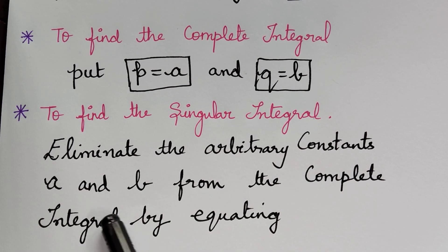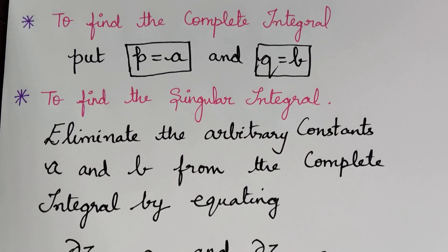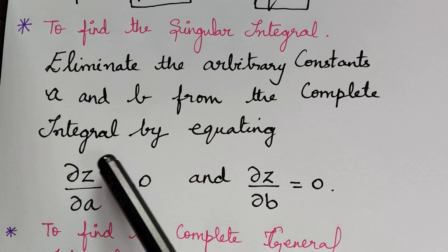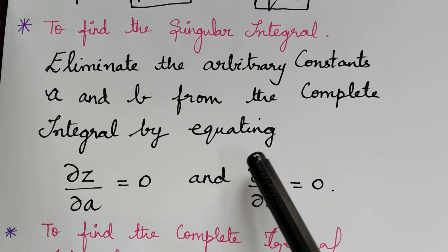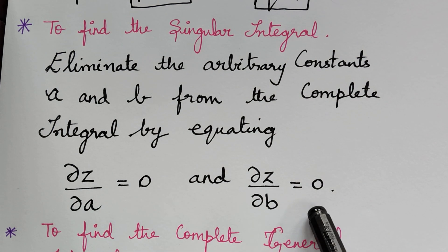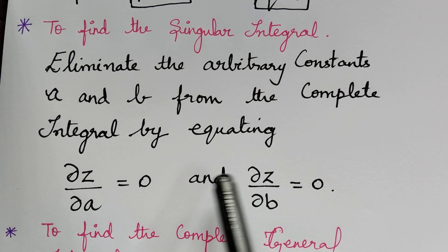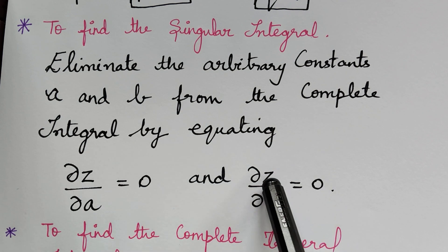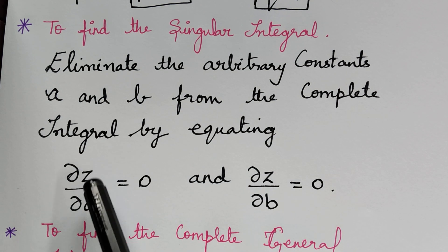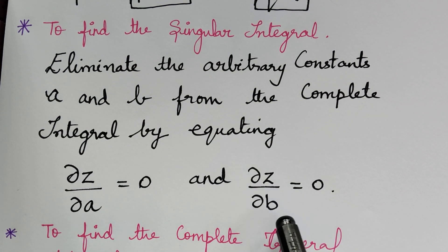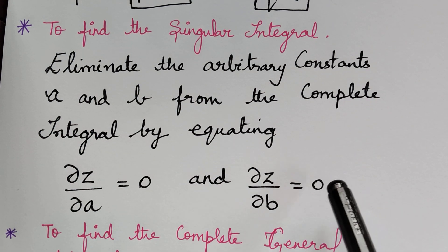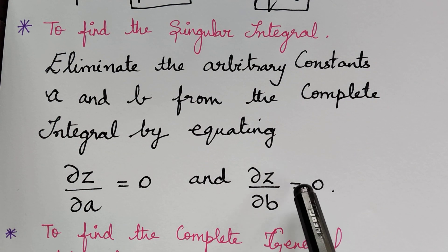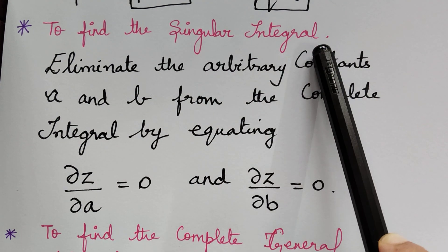To eliminate the arbitrary constants, we have to differentiate the complete integral with respect to a and b and equate them to 0, and solve those three equations — that is, ∂z/∂a = 0, ∂z/∂b = 0, and the complete integral. Combining the three, we will find the singular integral.